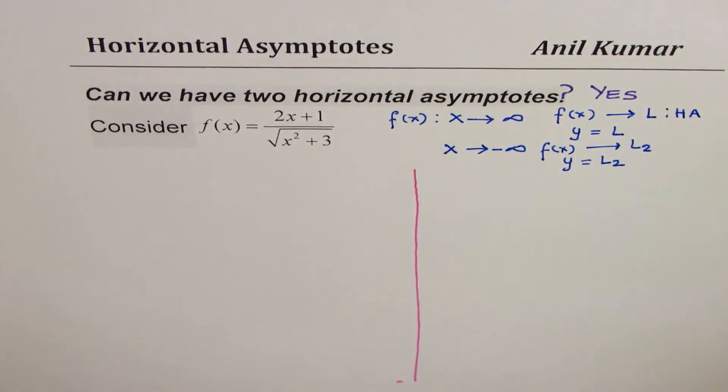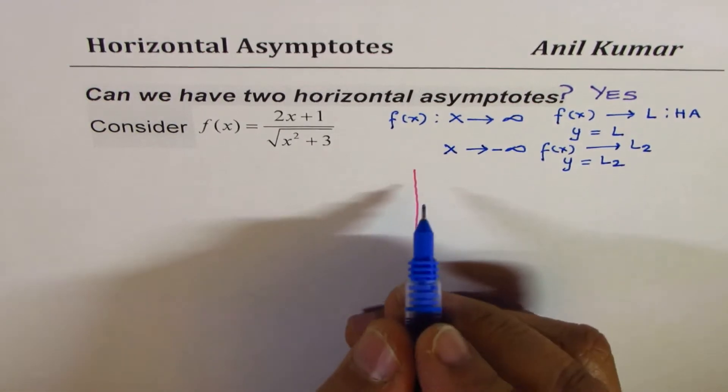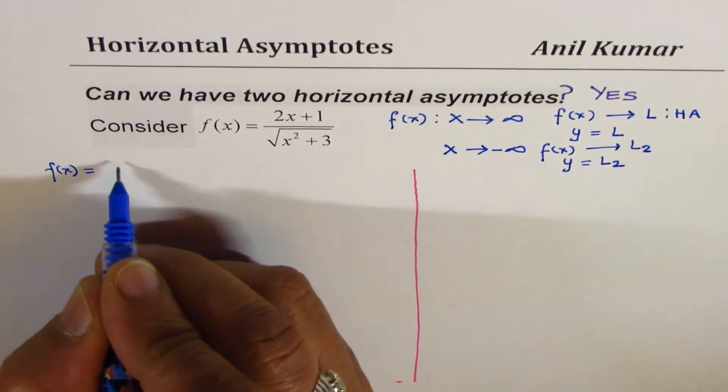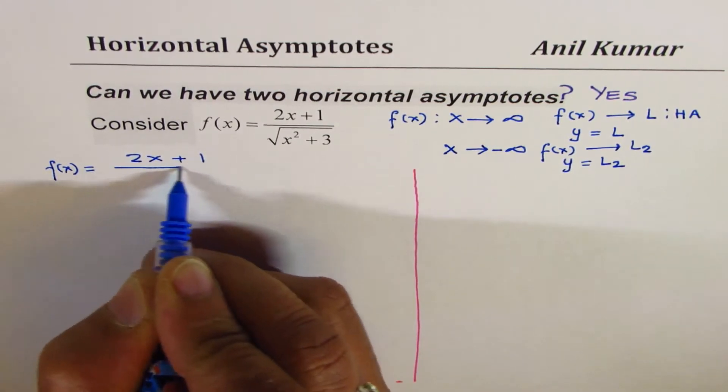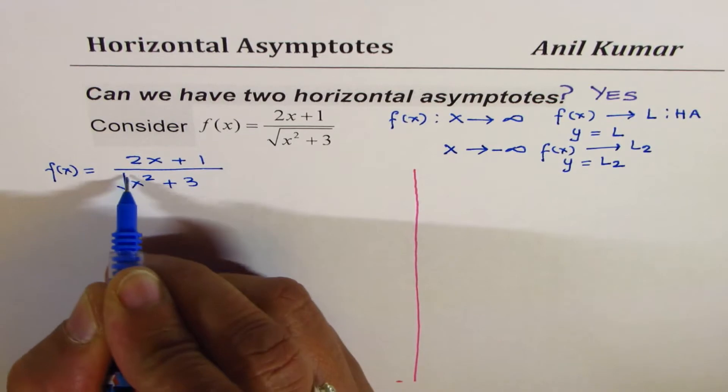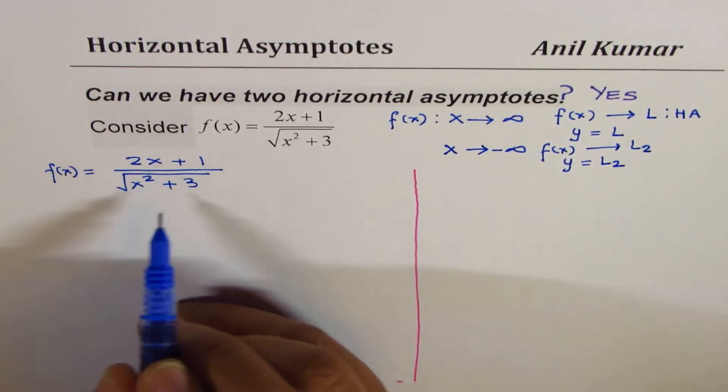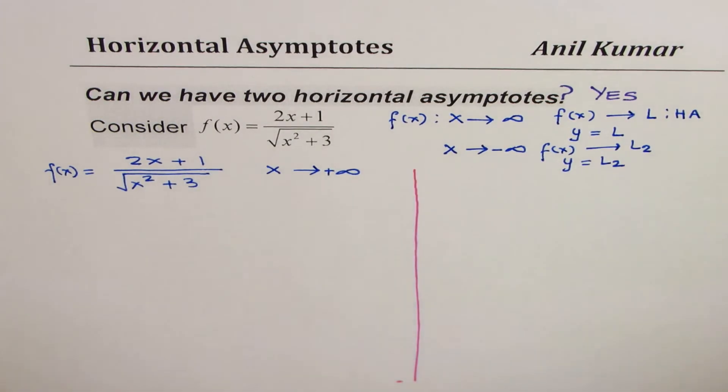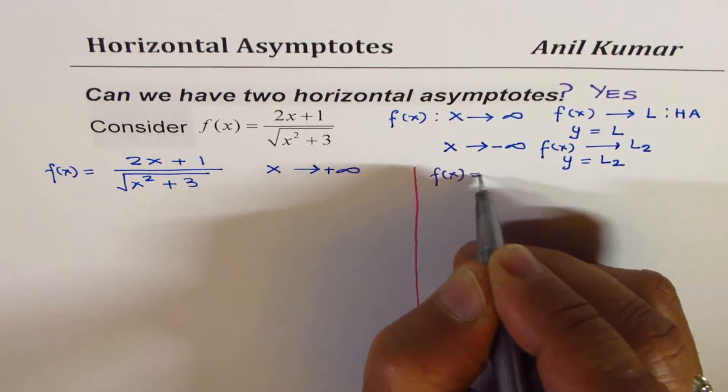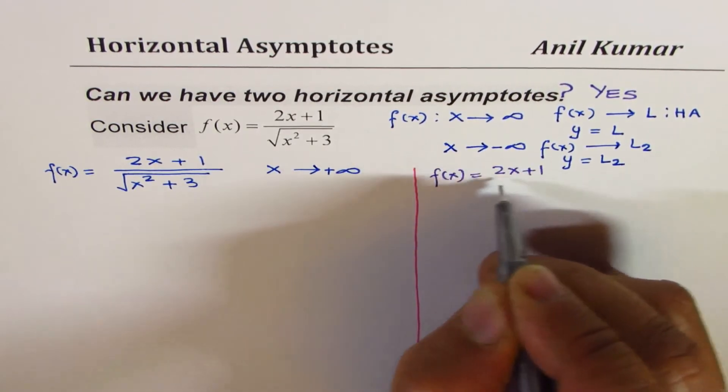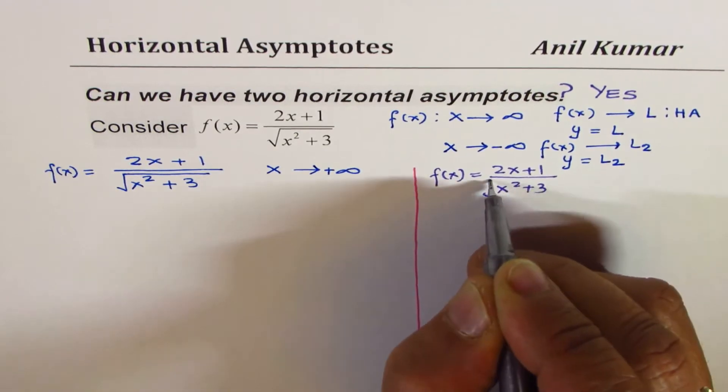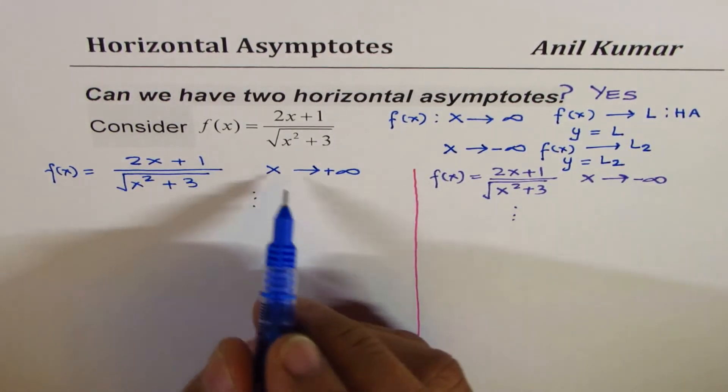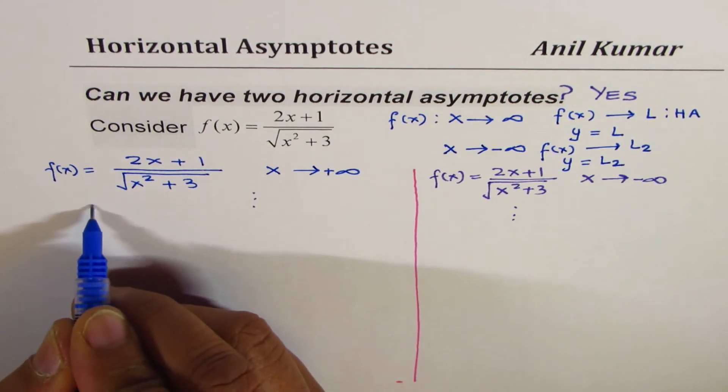Let me divide this page into two portions and solve for each. Let's begin with x equals positive infinity first. We have our function f(x) equals (2x+1) over square root of (x²+3). We are trying to find what happens when x approaches positive infinity. In the other half we'll see what happens to f(x) equals (2x+1) over square root of (x²+3) when x approaches negative infinity.